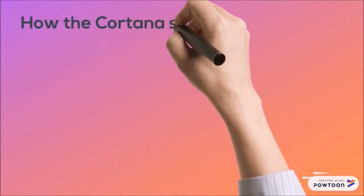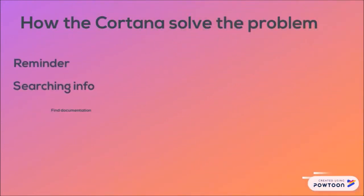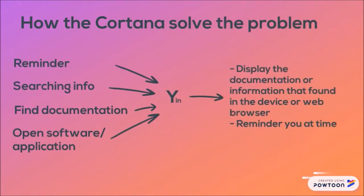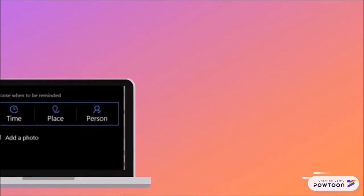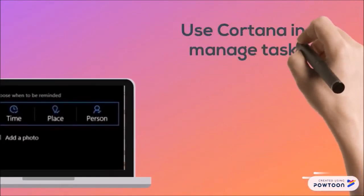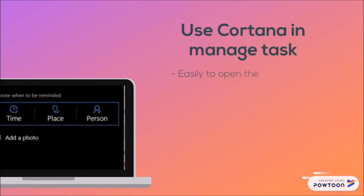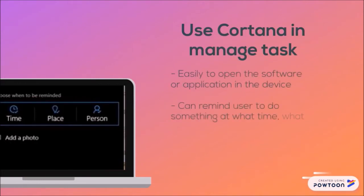Cortana solves the problem by taking the input with a reminder, searching info, finding documentation and opening software or application. Through the activation function, Cortana will generate the output which displays the documentation or information found in the device or web browser, as well as remind you at the right time. Cortana will easily open software or applications in the device and can remind users to do something at what time, what place and what needs to be done.